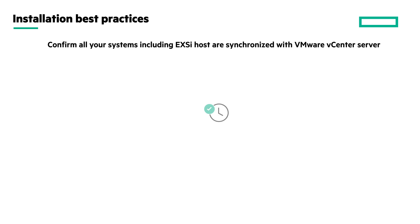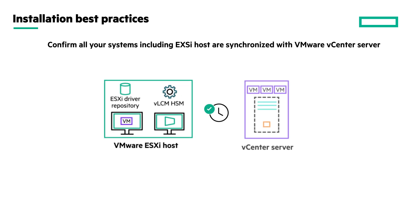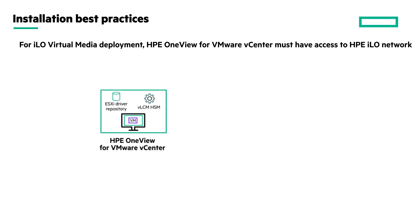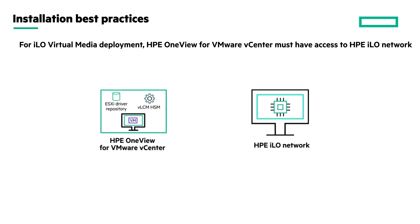Confirm that the time on all your systems, including your VMware ESXi hosts, are synchronized with the time on your VMware vCenter or a trusted time server. For ILO vMedia-based deployment, HPE OneView for VMware vCenter must have access to the HPE ILO network, and port 3512 must be opened in the firewall between HPE OneView for VMware vCenter and HPE ILO.